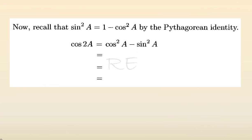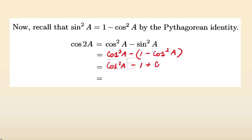From the Pythagorean identity, sine squared a is equal to 1 minus cosine squared a. Therefore cosine 2a is equal to cosine squared a minus (1 minus cosine squared a), when we replace sine squared a by 1 minus cosine squared a. Distributing the negative sign gives cosine squared a minus 1 plus cosine squared a, so cosine 2a equals 2 cosine squared a minus 1.